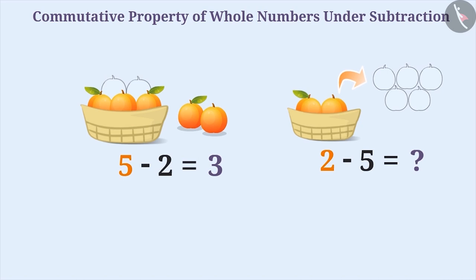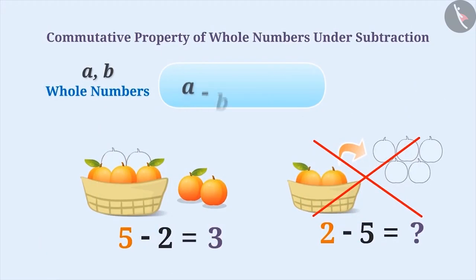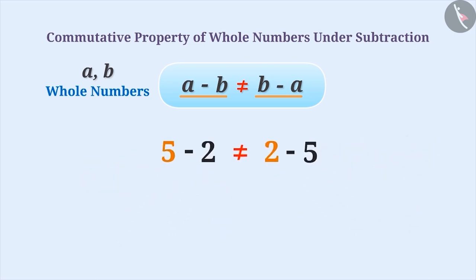Therefore, the subtraction of any two whole numbers a and b cannot be done by changing the order of the numbers. That is, a minus b is not equal to b minus a. Therefore, subtraction is not commutative for whole numbers.